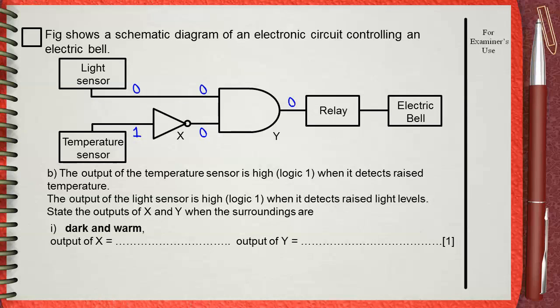So the answer will be, output of X, which is the NOT gate, it will be zero. Output of Y, which is the AND gate, will also be zero.